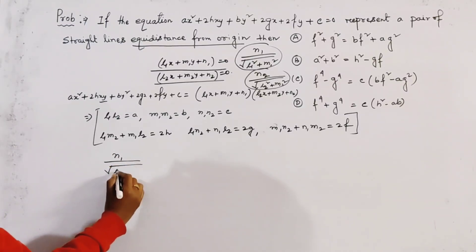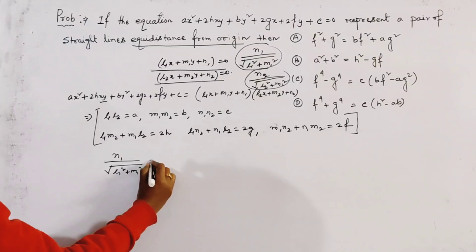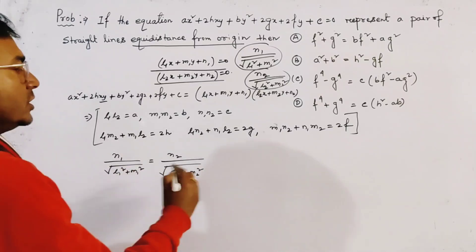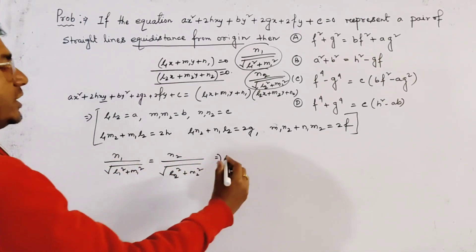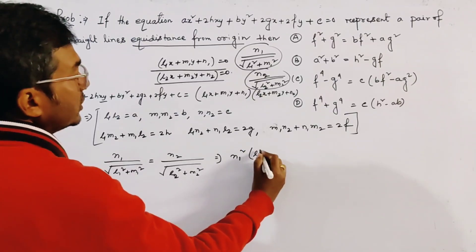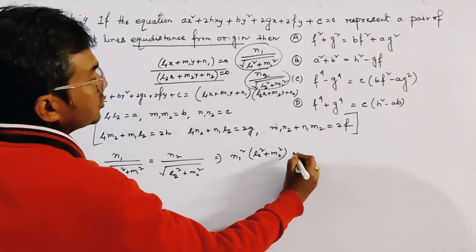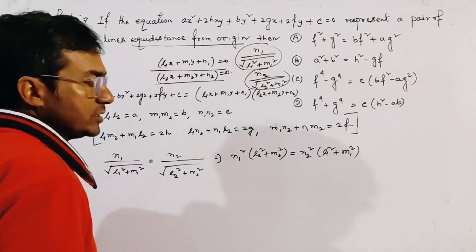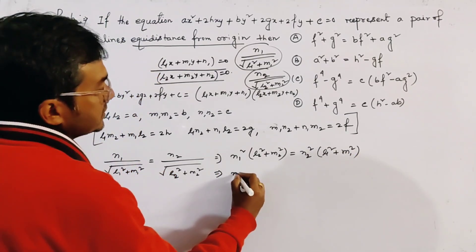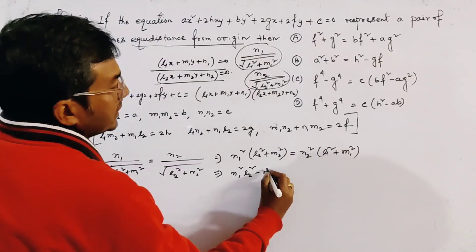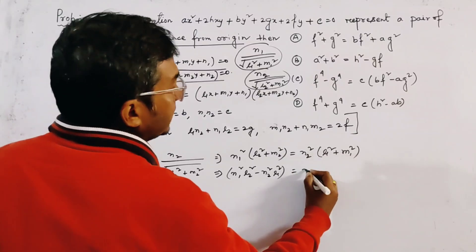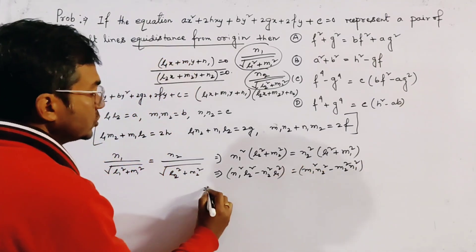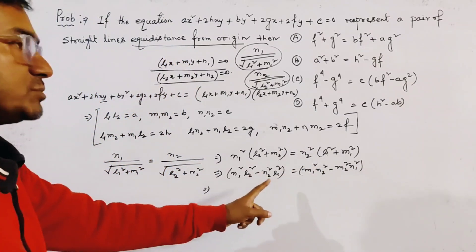So we write: N1 over root(L1 squared plus M1 squared) equals N2 over root(L2 squared plus M2 squared). By cross multiplication and squaring both sides, we get: N1 squared times (L2 squared plus M2 squared) equals N2 squared times (L1 squared plus M1 squared). Rearranging: N1 squared times L2 squared minus N2 squared times L1 squared equals M1 squared times N2 squared minus M2 squared times N1 squared.